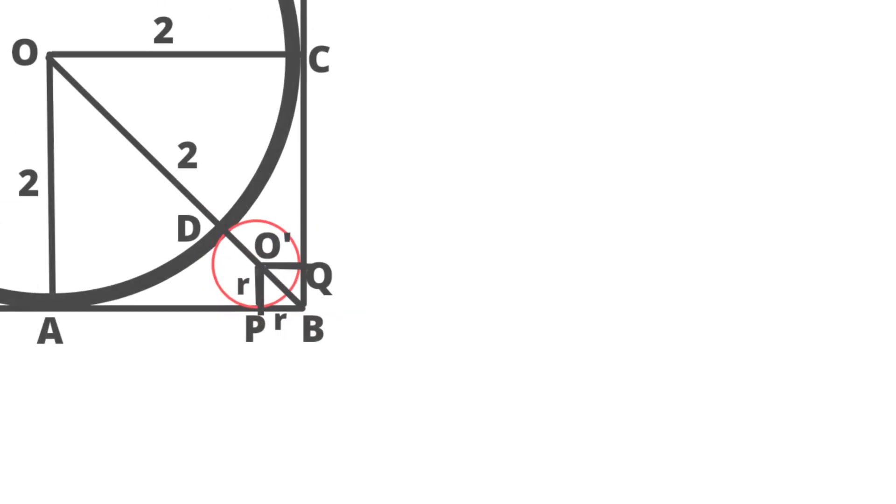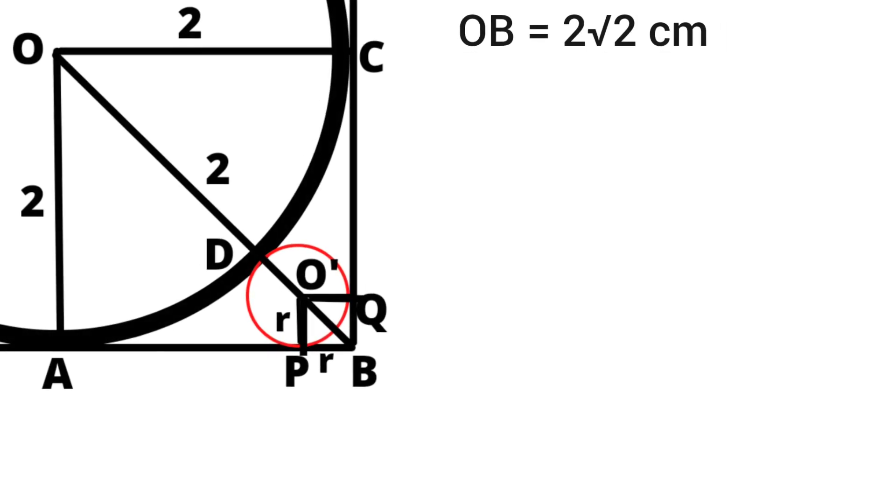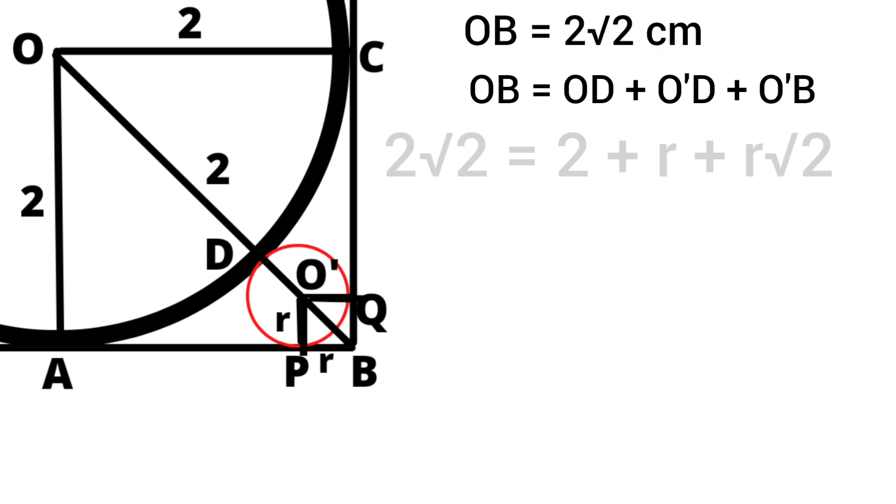We already know the length of OB. So OB equals OD plus O'D plus O'B. Length of OB is 2√2 cm. So 2√2 cm equals OD, which is the radius of the bigger circle which is 2 cm, plus O'D, which is the radius of the smaller circle which equals R, plus length of O'B is R√2. Then R plus R√2 equals 2√2 minus 2.